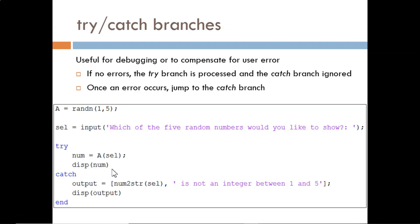But if the user inputs a number such as 3.7 or 12, then an error would occur in the command num equals a parentheses cell. At this point, MATLAB automatically jumps to the catch branch and will display this custom sentence explaining the problem to the user.